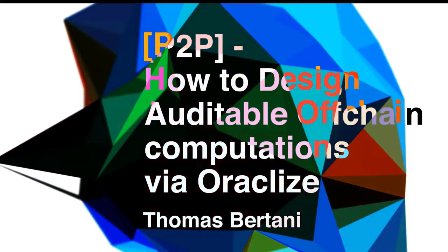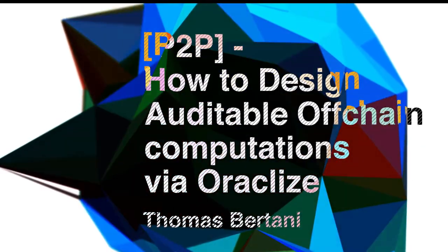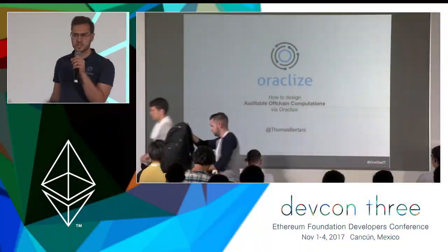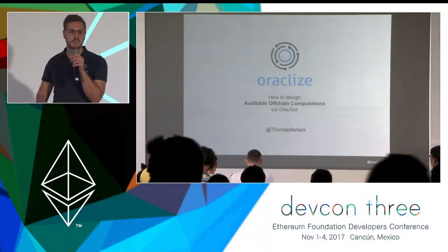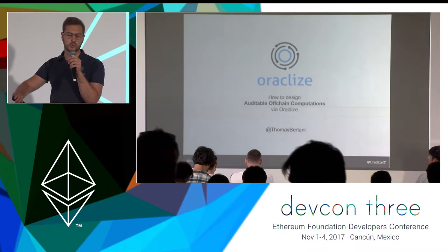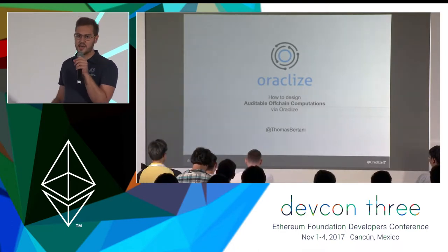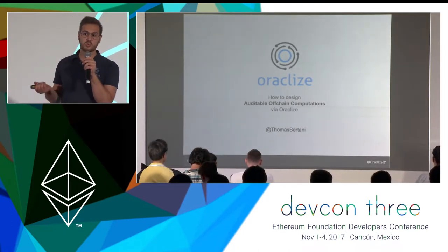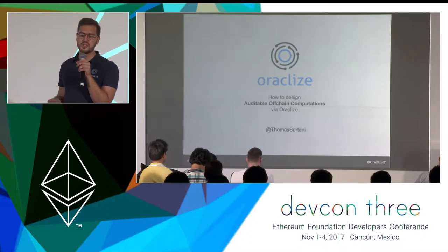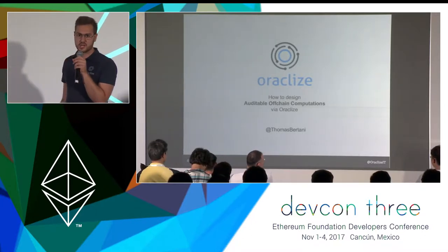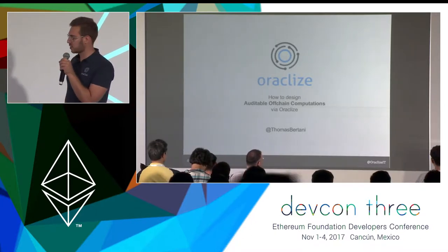This basically enables the execution of any piece of code in an off-chain context so that the result can be sent back to a contract on the blockchain, and in the future it will be possible to verify it there. We will show what the proof is and how it's possible to design one off-chain.